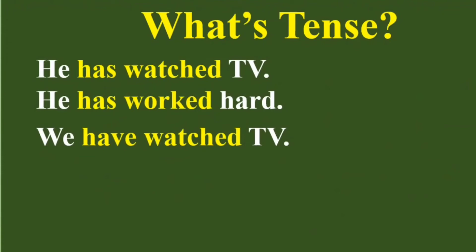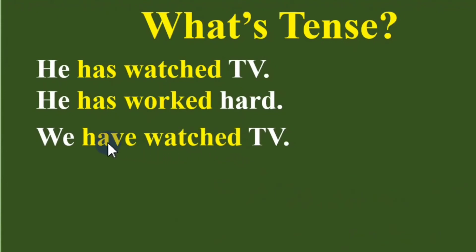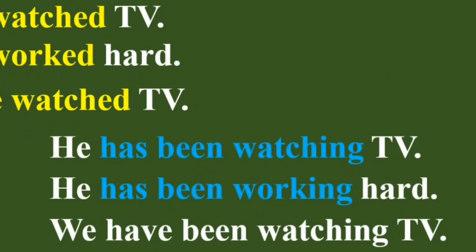He has watched TV, he has worked hard, we have watched TV. If you see the auxiliary 'has' or 'have' with the past participle — the verb three form — this is present perfect. He has watched TV: present perfect. He has worked hard: present perfect. We have watched TV: present perfect. If there is 'has' or 'have' with 'been' and verb -ing, this is present perfect continuous. For example: 'he has been watching TV,' 'he has been working hard,' 'we have been watching TV' — all present perfect continuous.